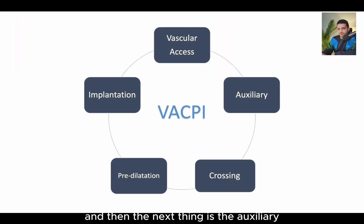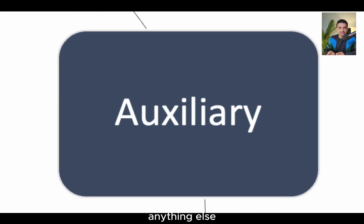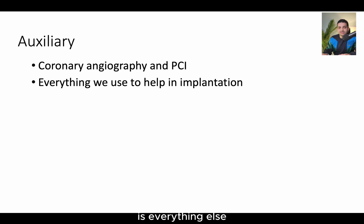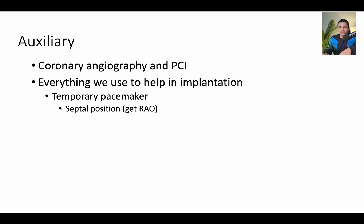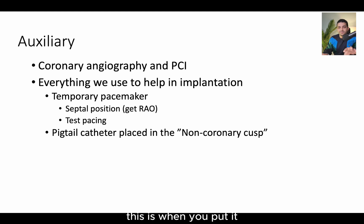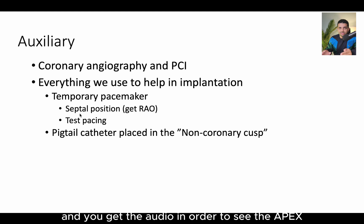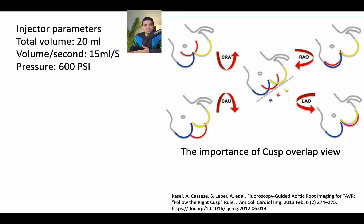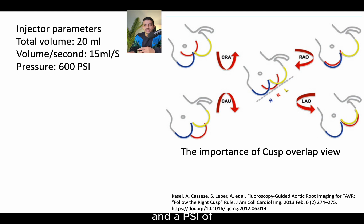The next thing is the auxiliary. What I mean by auxiliary here is anything else — anything other than the implantation of the valve itself. If you're going to do a coronary angiography, this is the time. If you're going to do a PCI, this is the time. If you're going to put the temporary pacemaker, put it right now. If you want to do a pigtail for root angiography, this is when you put it. For the temporary pacemaker wire, do it in a step-up position and use audio to see the apex. Testing of the pacemaker and rapid pacing also happens at this point.